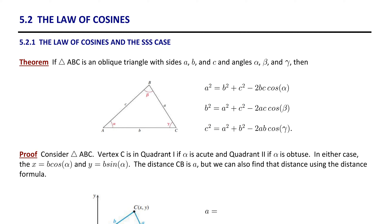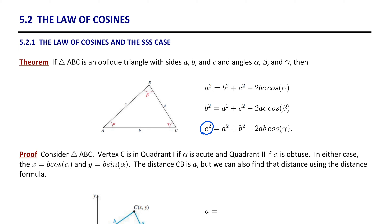This same pattern is exhibited in the second formula: side B is isolated and squared, equal to the sum of the squares of the other two sides minus 2 times the product of those sides times cosine of the angle between them or opposite side B. The third formula follows this same pattern. The key is that the isolated side is always opposite the angle in the cosine, and the other two sides are distinct from it. Once you understand that pattern, you really know three formulas in one.